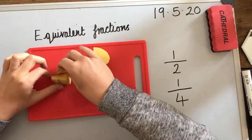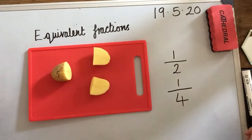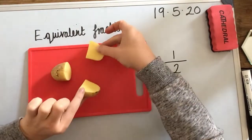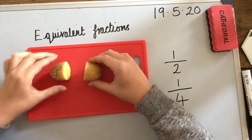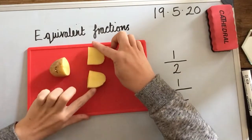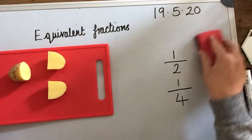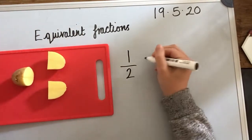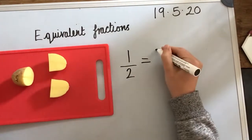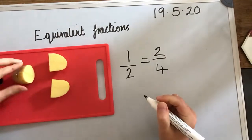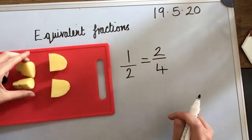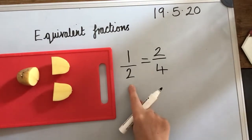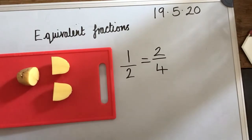Now, potatoes are good because if I go like this and put these back together, it stays together — that's why I use a potato. So, we've got an equivalent fraction here. This half is the same as two quarters. One half here is the same as two quarters, and we can write that as a number sentence like this. One half is equal to two quarters.